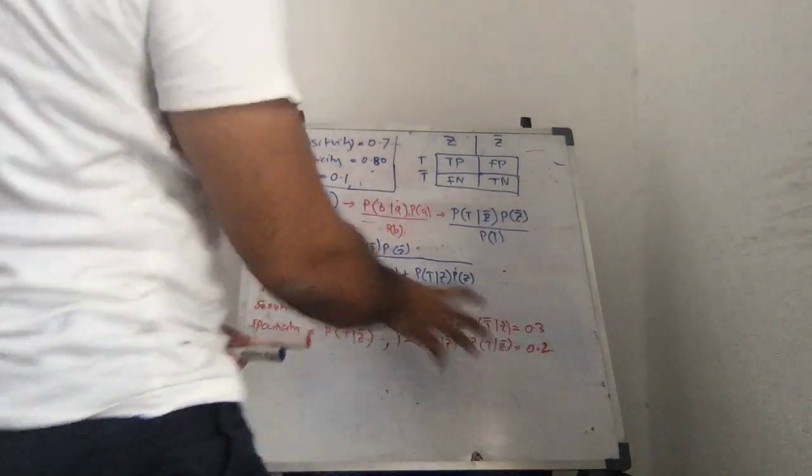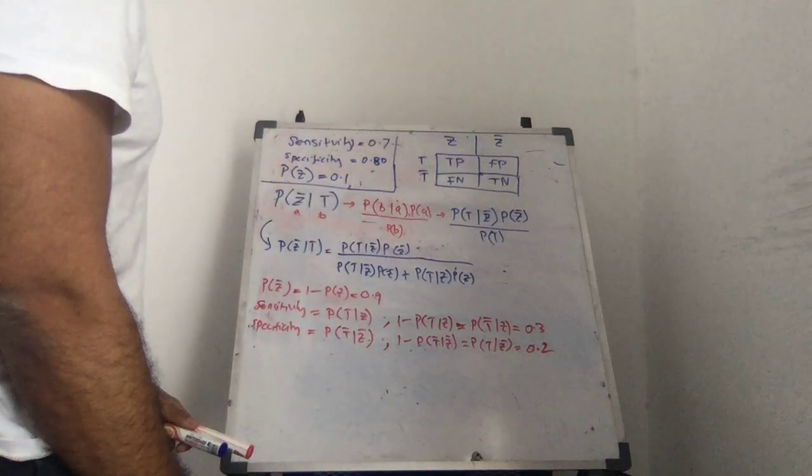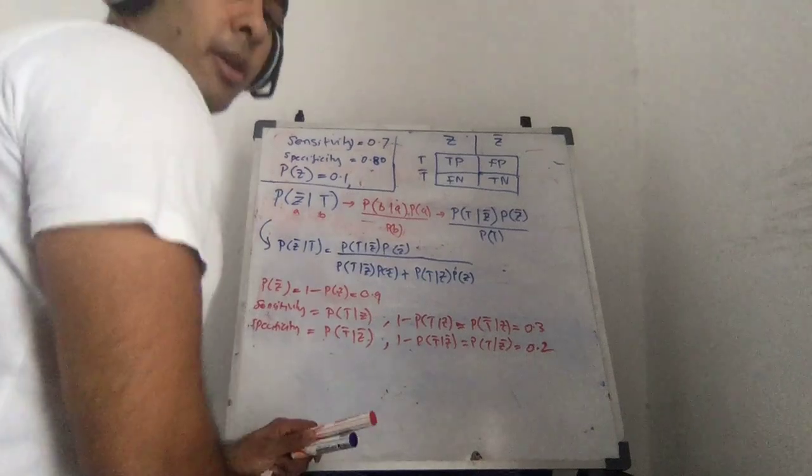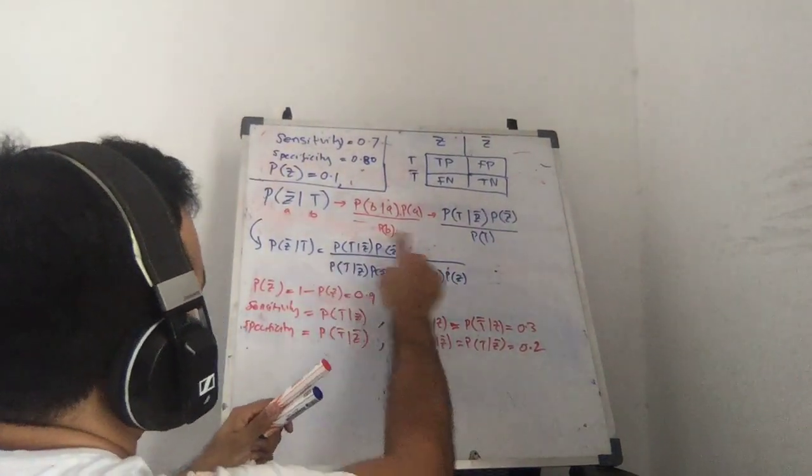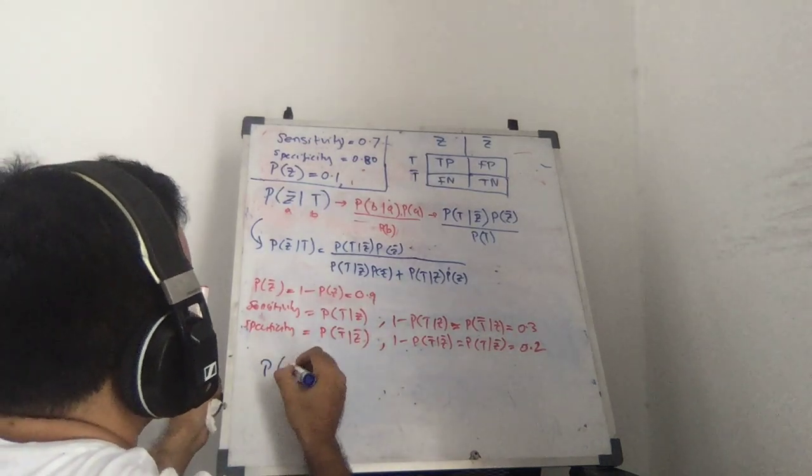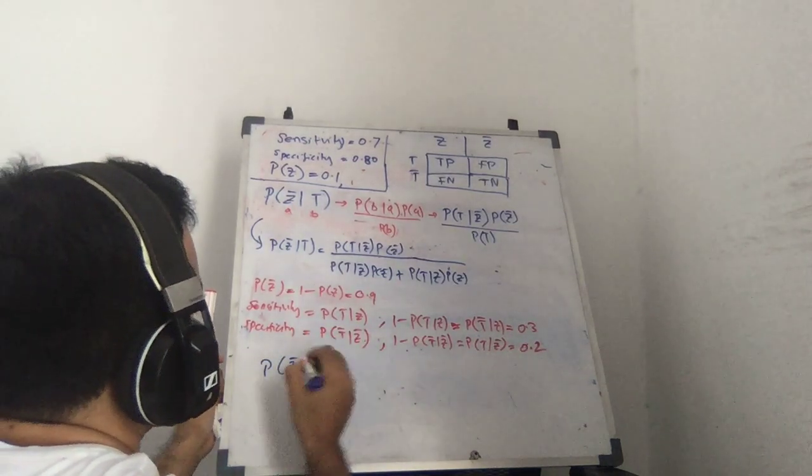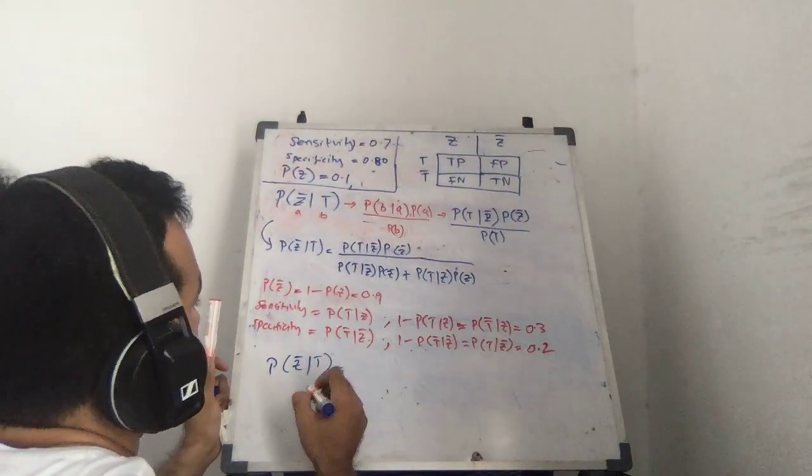So, once we have this, it's just a matter of plugging and chugging everything, right? Hopefully, that's clear. Then, now we can just put the spot down here. And then you can just plug things in and you get the answer. So, we can say probability of not Z given T is equal to,